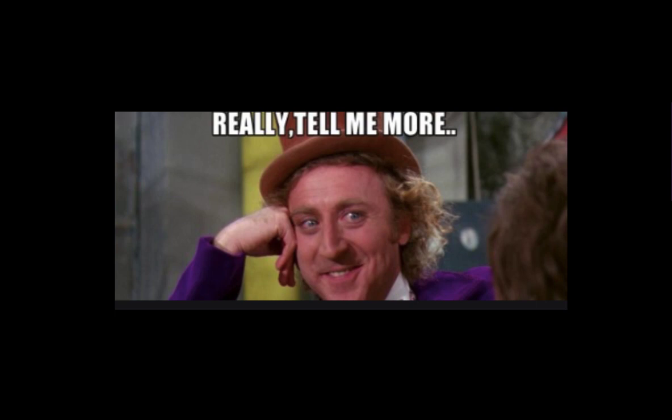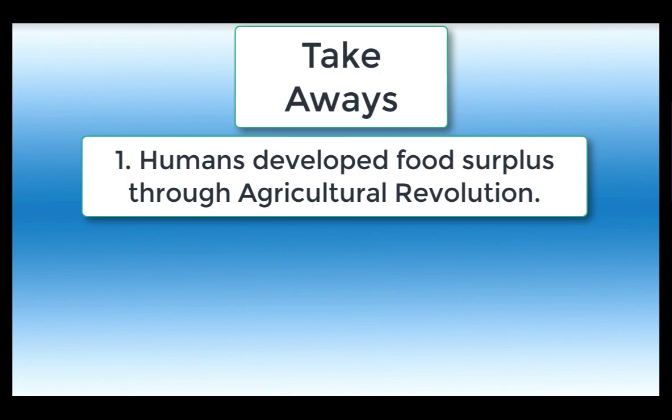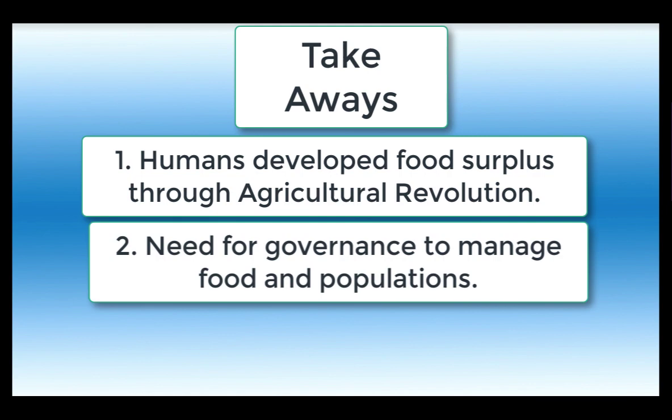What do we learn from all this about the Americas when it comes to human development and governance in this period? Here are some takeaways. Number one, humans discover the benefit of farming and begin to develop a food surplus. Number two, populations grow due to food production, leading to the need for systems of government that use things like irrigation, legal codes, river systems, and security forces to provide for that growing population.